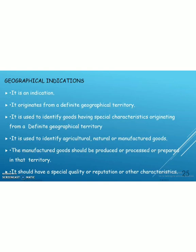Next is geographical indications. It is an indication that originates from a definite geographical territory, and is used to identify goods having special characteristics originating from that territory. For example, Mysore silk, Basmati rice, Mysore sandalwood soap, Kolhapuri chappal, and Tirupati laddu are all examples of geographical indications.